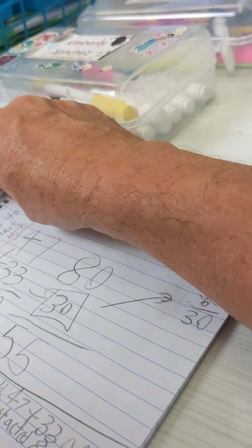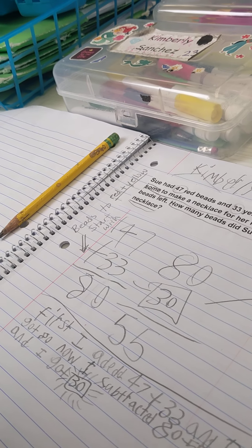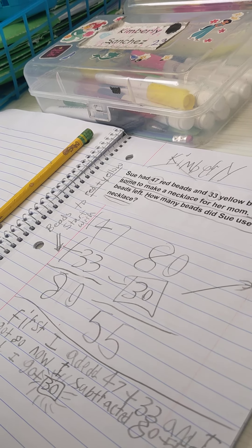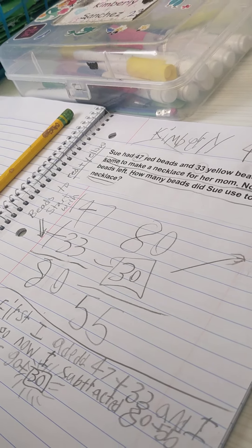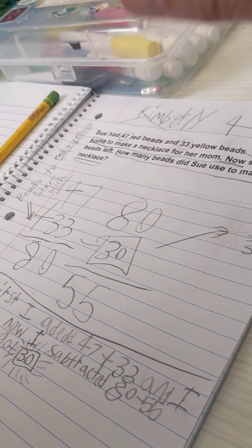So why did I choose the 47 and 33? To do that, I have to say give me the total of the red and the yellow beads, right? And that's why 47 plus 33. Does that make sense?